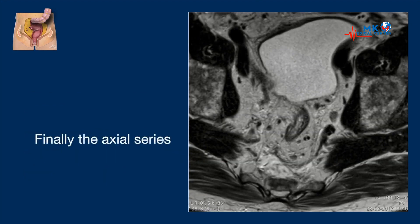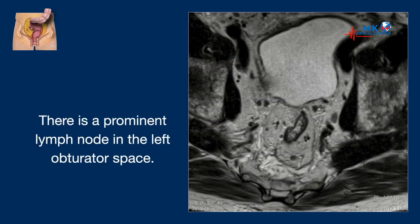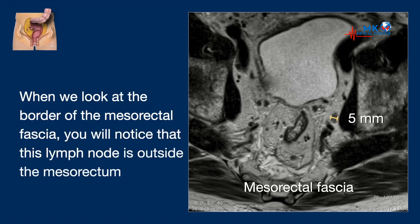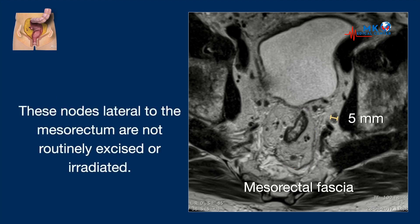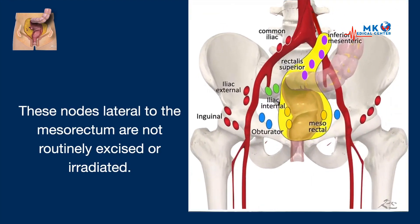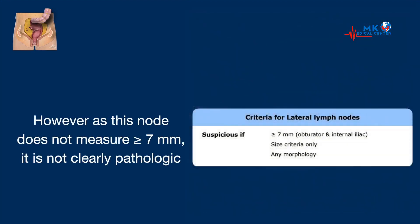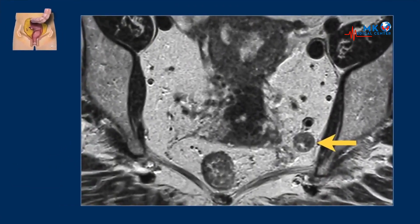Finally the axial series. Notice there is a prominent lymph node on the left side, and when we look at the border of the mesorectal fascia you will notice that this lymph node is outside the mesorectum with a short axis of about 5 mm. These nodes lateral to the mesorectum are not routinely excised or irradiated. However, as this node does not measure more than 7 mm, it is not clearly pathologic, because the criteria for lymph nodes lateral to the mesorectum are different — only size matters, so they need to be 7 mm or more, like in this case where there clearly is a pathological lymph node just lateral to the mesorectal fascia in the left obturator space. So we need to mention this in the report.